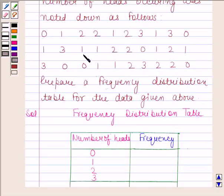No head appears 6 times, so frequency of 0 is 6. One head appears 10 times, so frequency of 1 is 10. Two heads appear 9 times, so frequency of 2 is 9.